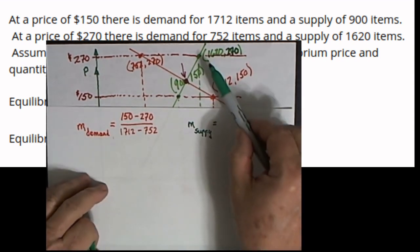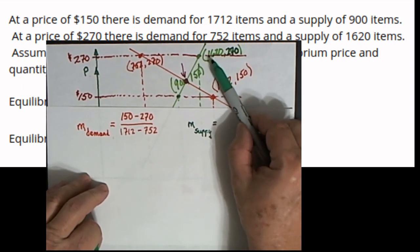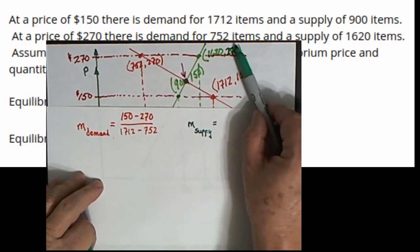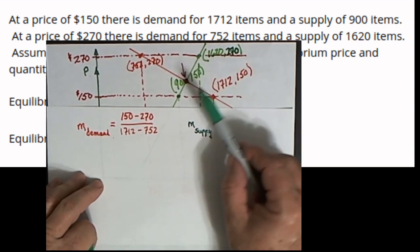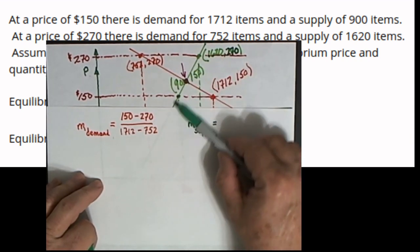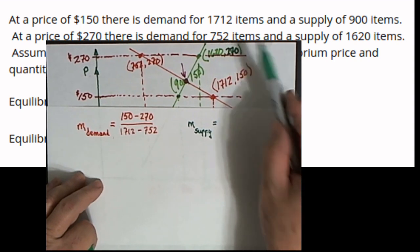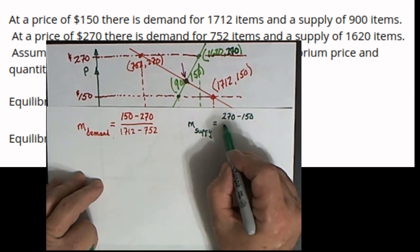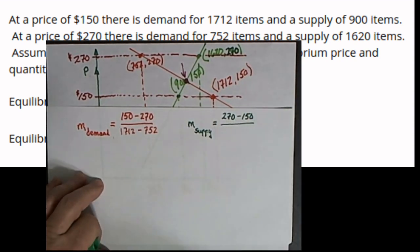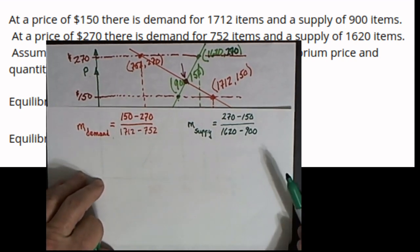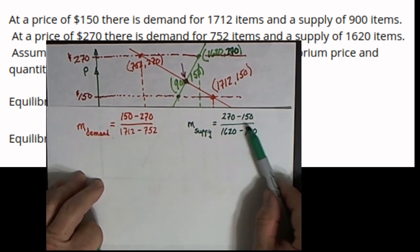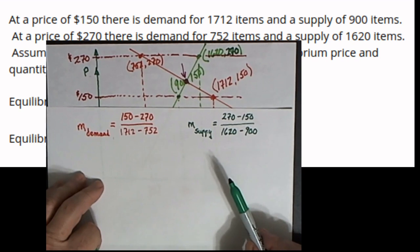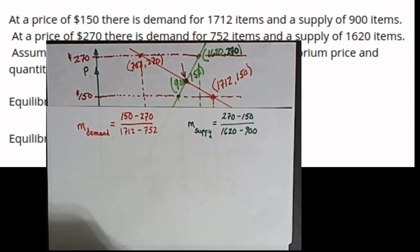Now I made a correction. This point here I had previously listed as 1620 and 150, it's really 270. 1620 and 270. So when I'm finding the slope of this line, it's going to be the ending value which is 270 minus the starting value which is 150. So that's the rise divided by the ending x-value which is 1620 minus the starting x-value 900. So there's the rise over the run for the supply curve.